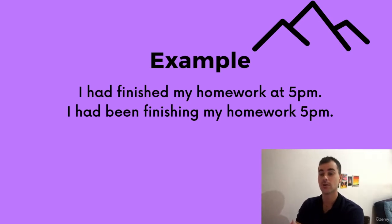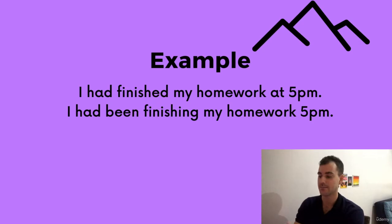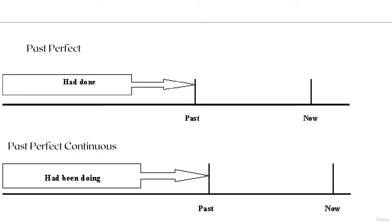Example: I had finished my homework at 5 p.m. versus I had been finishing my homework at 5 p.m. Past perfect: I had finished my homework at 5 p.m. — 5 p.m. is the point in the past, and my homework had already been finished. Past perfect continuous: I had been finishing my homework at 5 p.m. — 5 p.m. is the point in the past, but it's not entirely clear if the finishing of the homework was done.